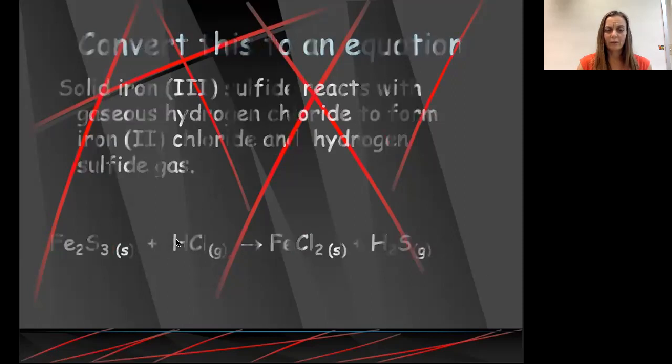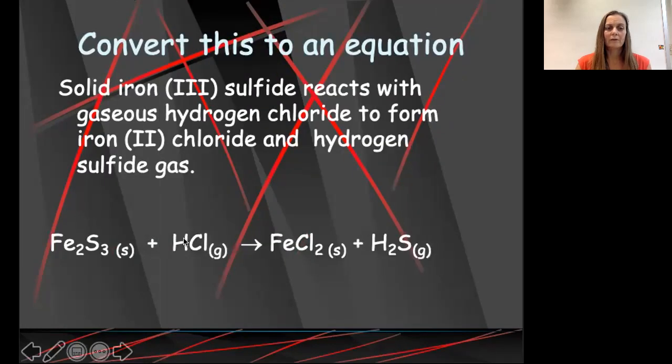This is not balanced. We have two hydrogens here, only one here. So skeleton equations are not balanced equations. They're just telling us what the substances are. But it's also really important to notice that in a skeleton equation, we are always going to write our formulas correctly. So we're going to write Fe2S3 for iron(III) sulfide, because we want to make sure that our compound is neutral. That's going to require two iron(III)s for three sulfide ions. And the same way with the hydrogen chloride, with the iron(II) chloride, and with the hydrogen sulfide gas.